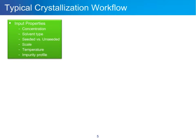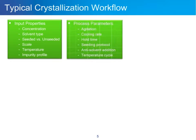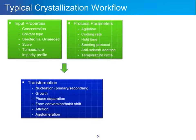Combined with input properties are process parameters you can choose, such as agitation, cooling rate, hold times, seeding protocol, anti-solvent addition, and temperature cycle. When you combine these, you get transformation in the crystallization — nucleation (primary and secondary), crystal growth, phase separation or oiling out, form conversion, habit shift, attrition, and agglomeration.